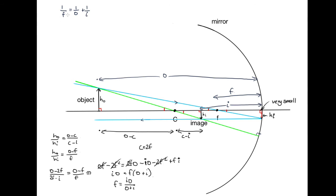But what we're trying to get is an expression for 1 over F. So we can write 1 over F is equal to O plus I over O I. So that's equal to O over O I plus I over O I.